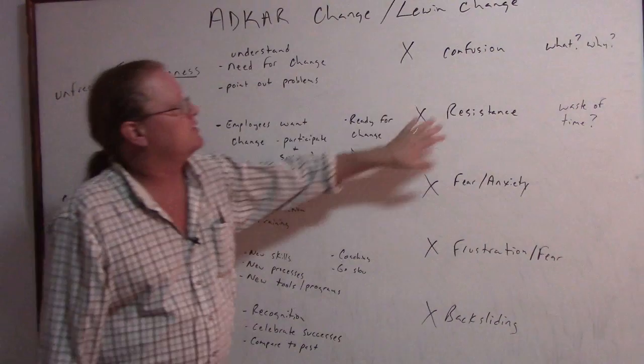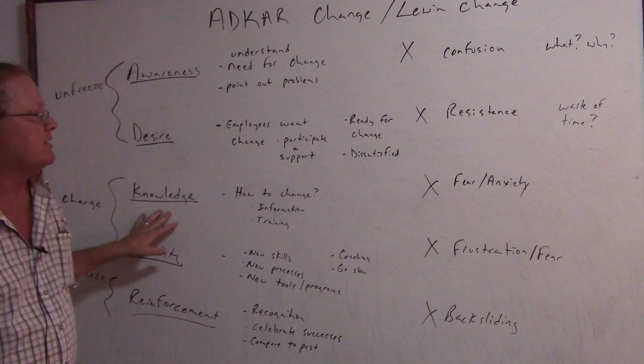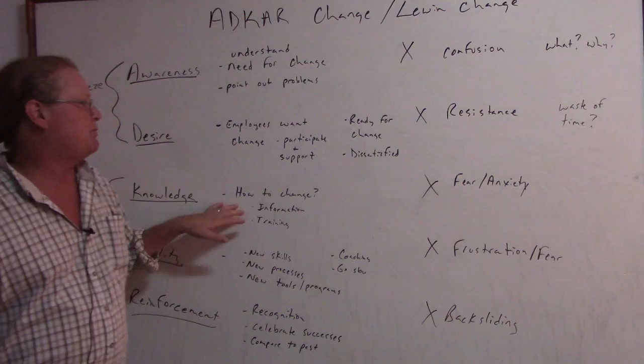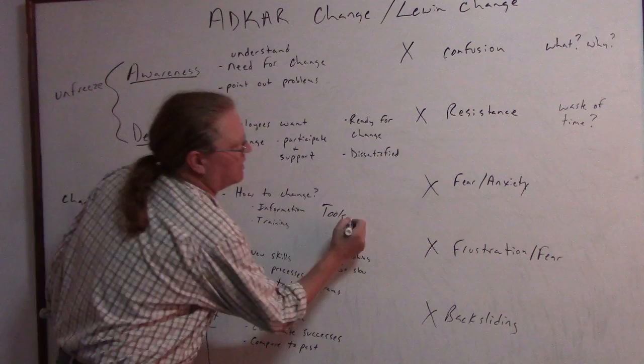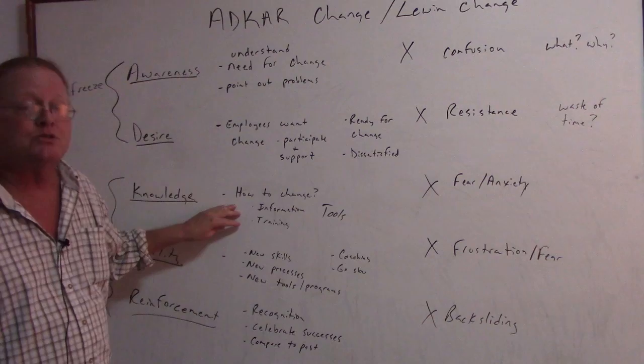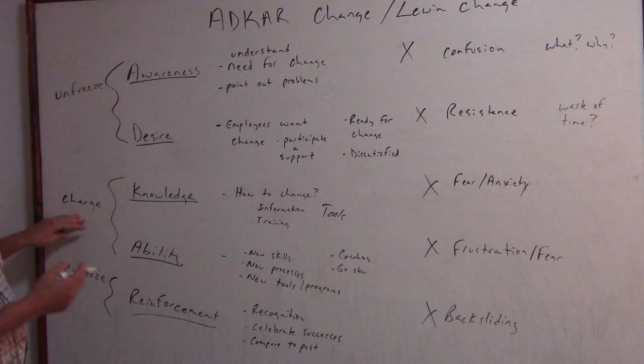Once they have the desire to change, with little confusion and little or no resistance, they need to have knowledge — how to change. Do I need information? Do I need training? How can we make this happen? Once we provide them with all the tools, this will reduce the fear and anxiety they would experience if they didn't know how to change. Now we are in what Lewin would call the change stage.